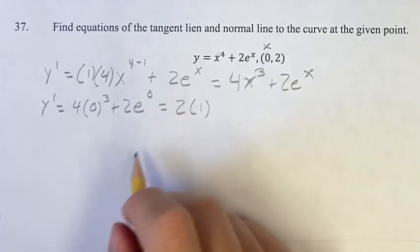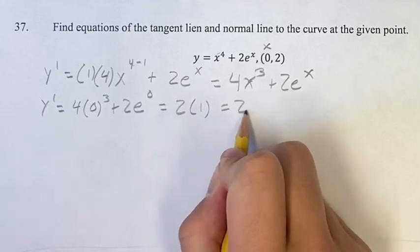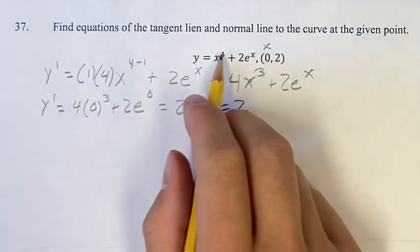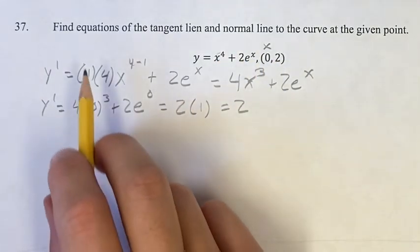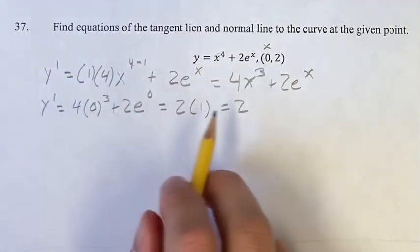Again, plus 0, but we don't have to worry about that. 2 times 1 is 2. So this is the derivative of this curve at this point, which means it's the slope of the tangent line at this point.